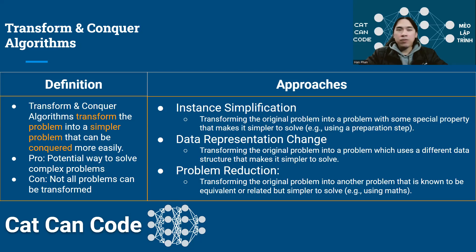The definition of Transform and Conquer algorithms is that it aims to transform the problem into simpler problems that can be conquered more easily. The pro of this approach is that this is a potential way to solve complex problems that cannot be solved easily directly. However, the con of this strategy is that not all problems can be transformed.